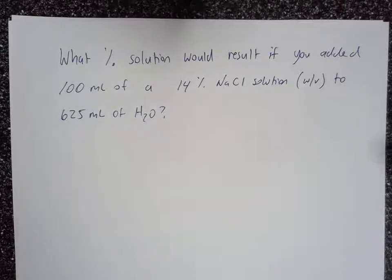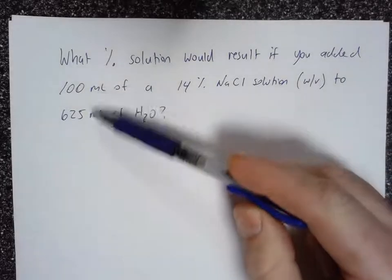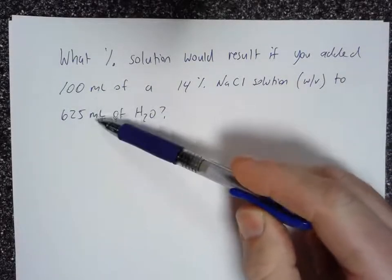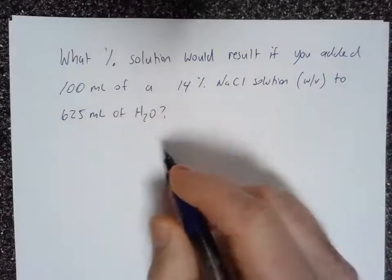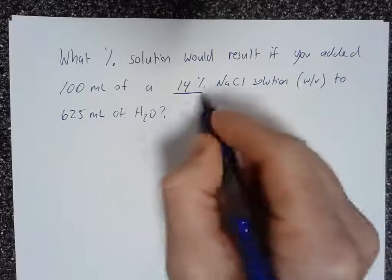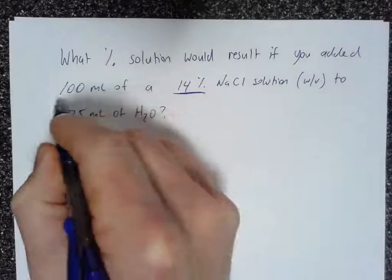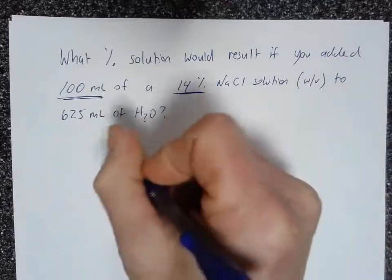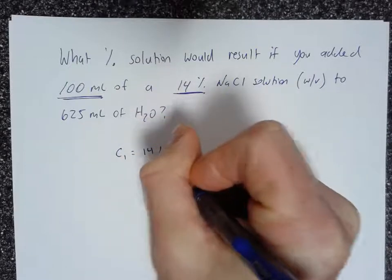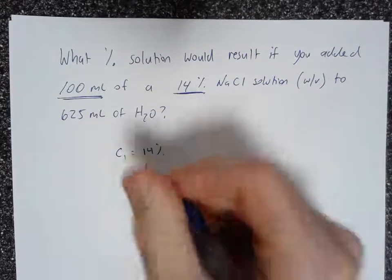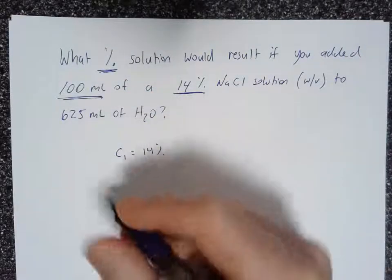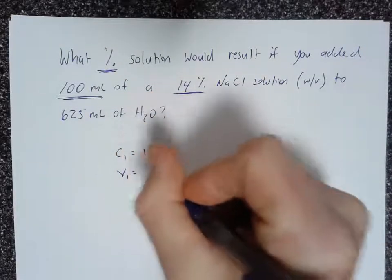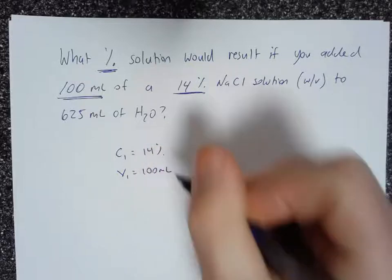So this is sort of a tricky problem because you have to know that the final volume is the combination of the two. So our stock concentration is 14%. Our stock volume is 100 milliliters. So C1, 14%. No need to change any units here because we're interested in percent at the end. V1 is 100 milliliters.